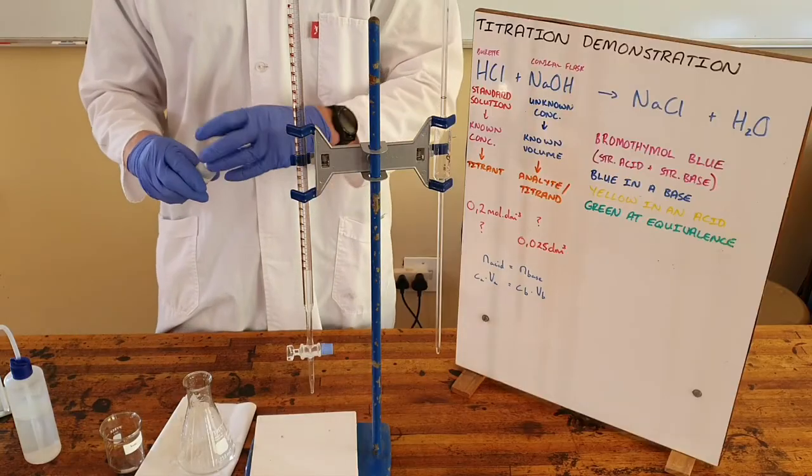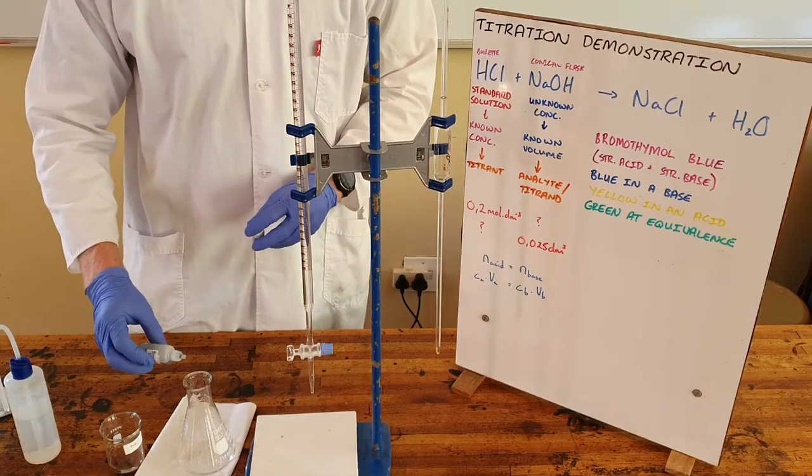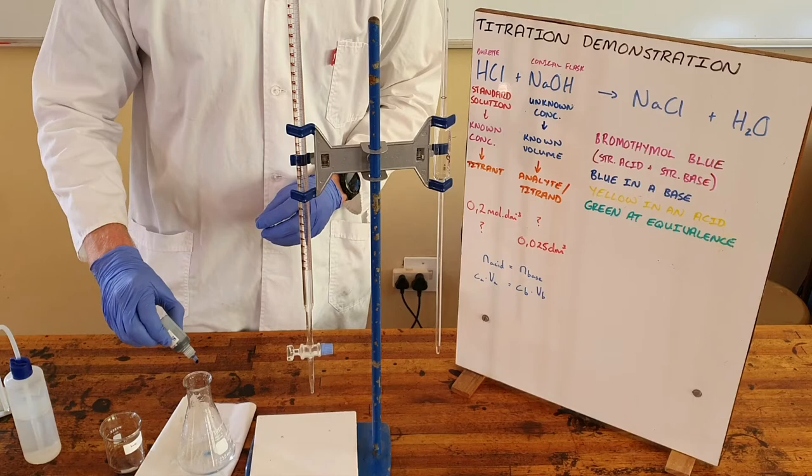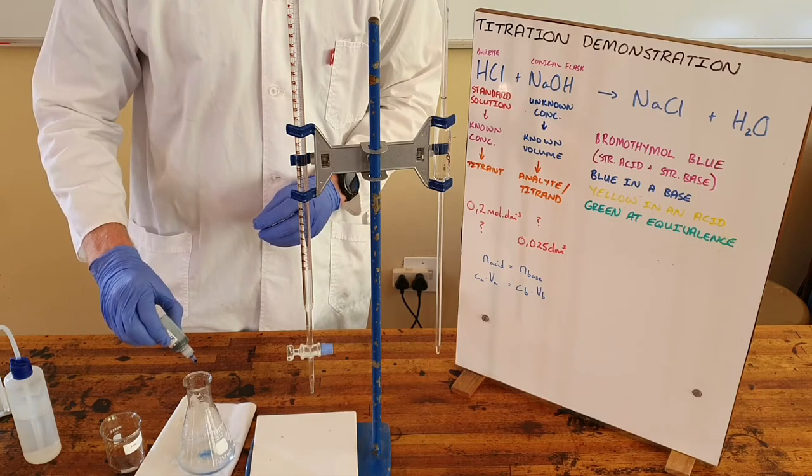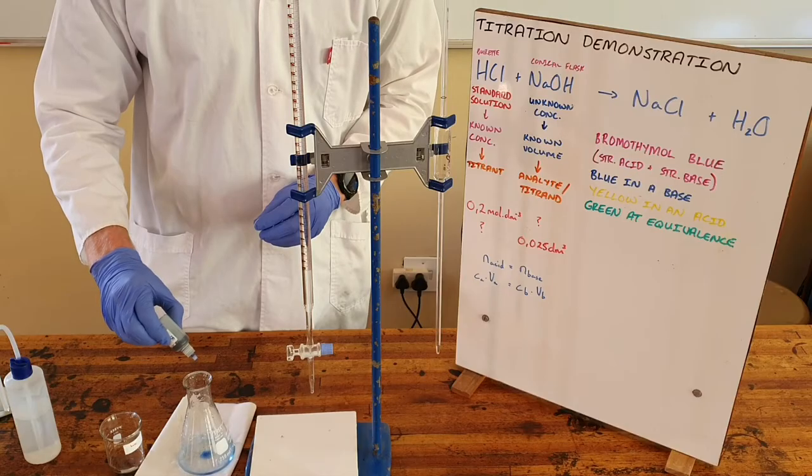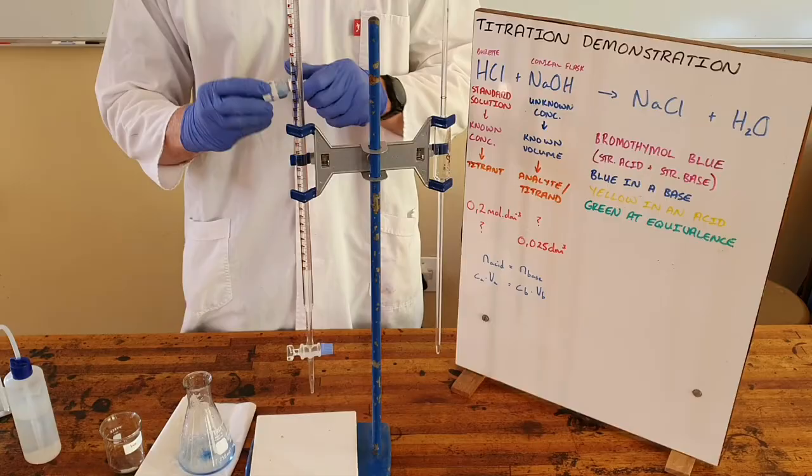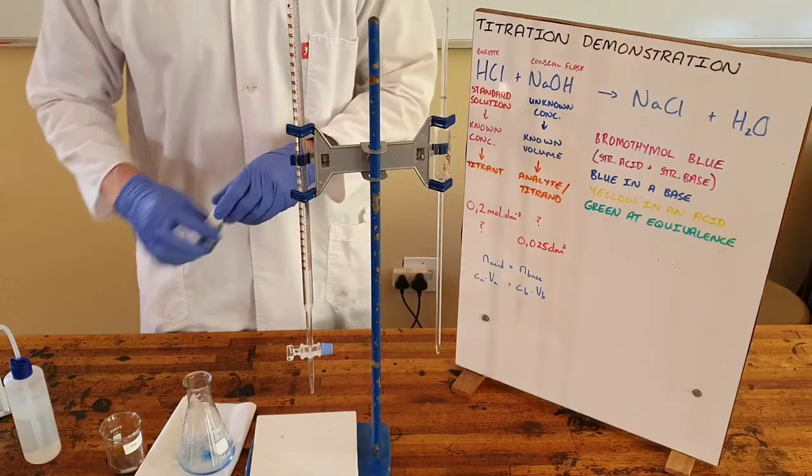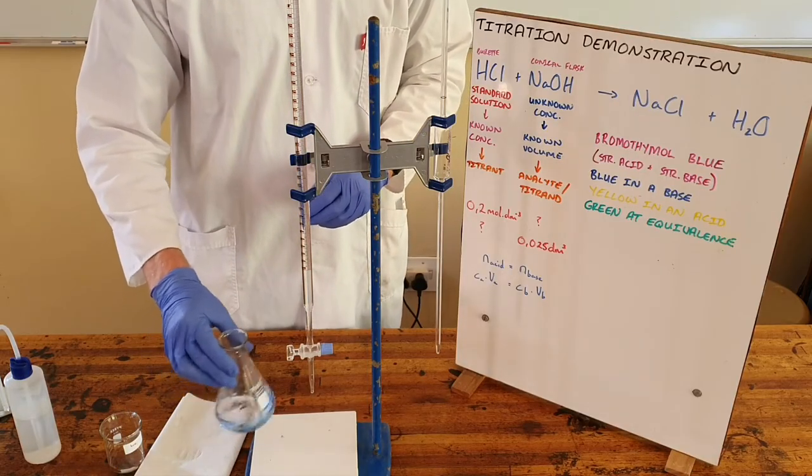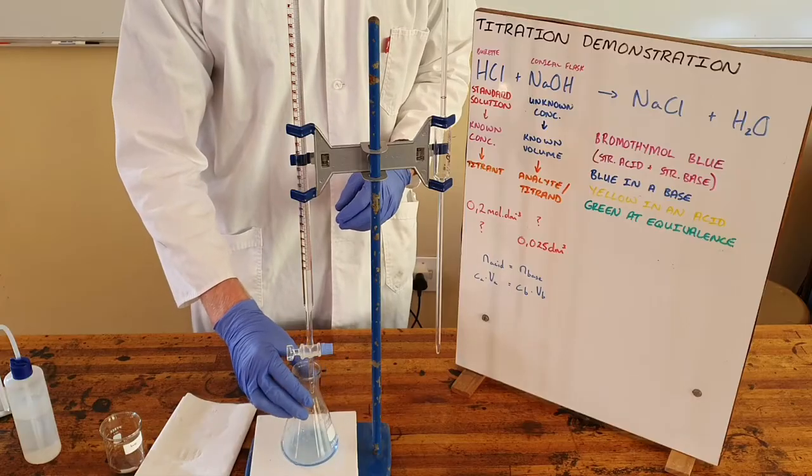So since this is a strong acid and a strong base we can use bromothymol blue which we know is blue in a base and yellow in an acid but what interests us is the equivalence point here which is the point where the quantity of acid has completely neutralized the quantity of base and we know that happens when this is a green color.